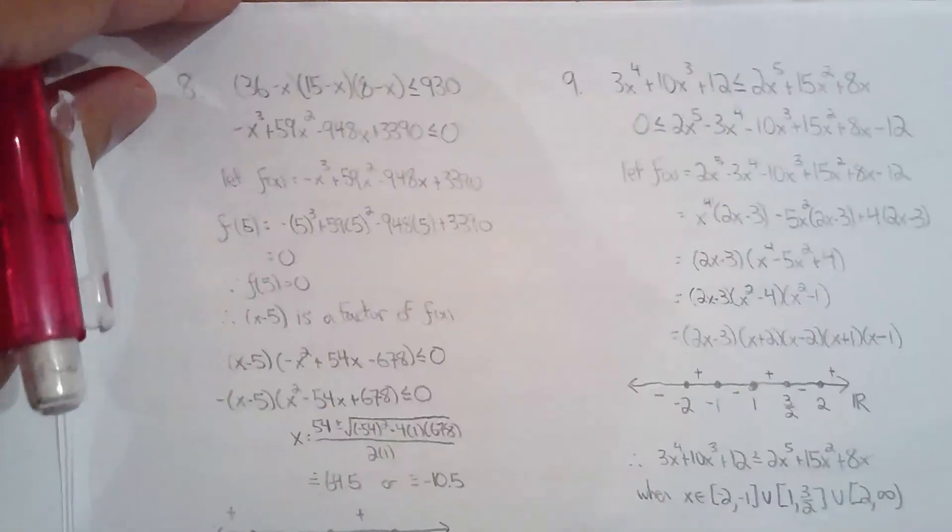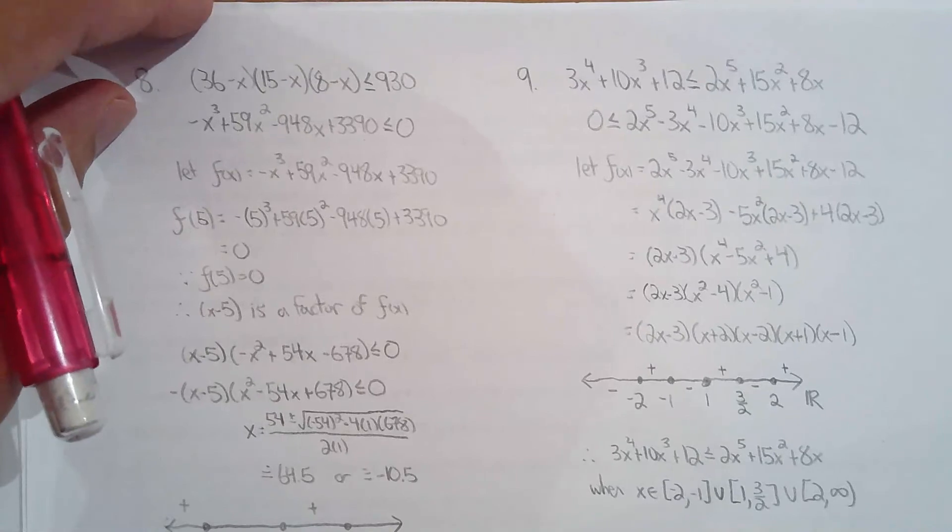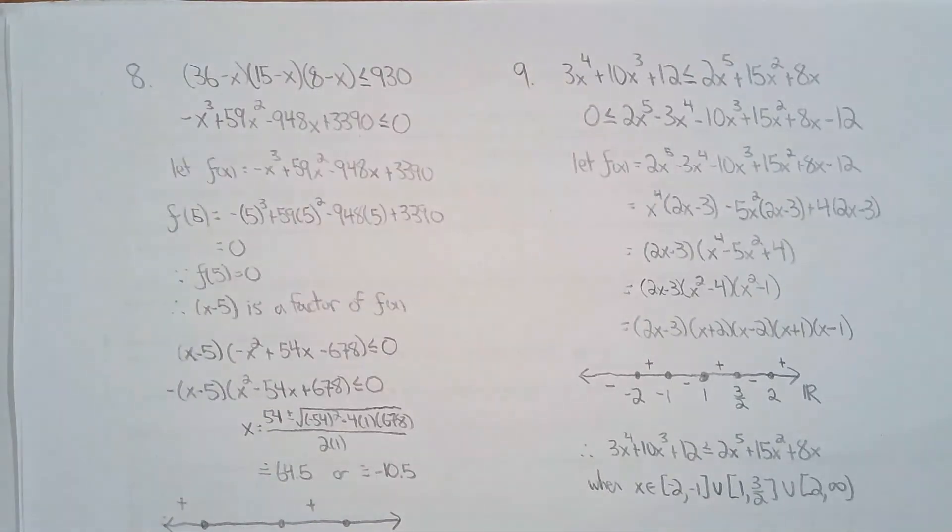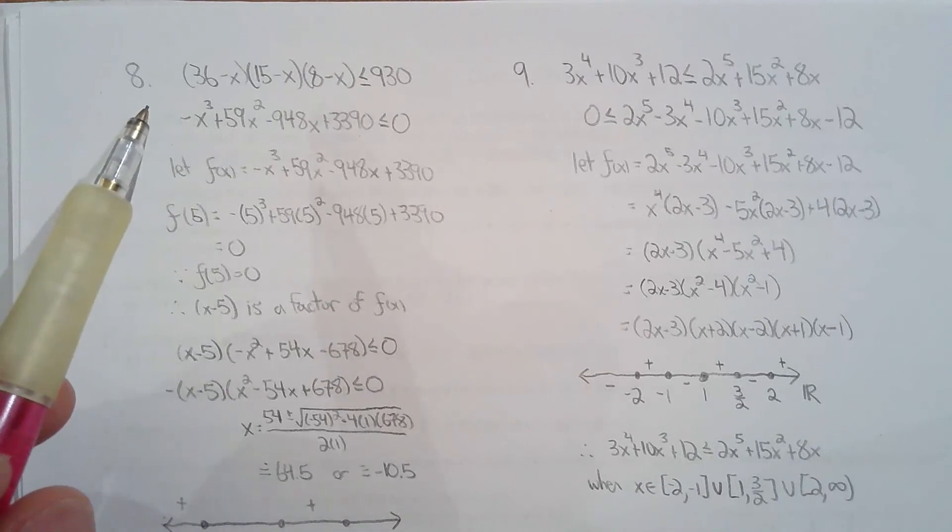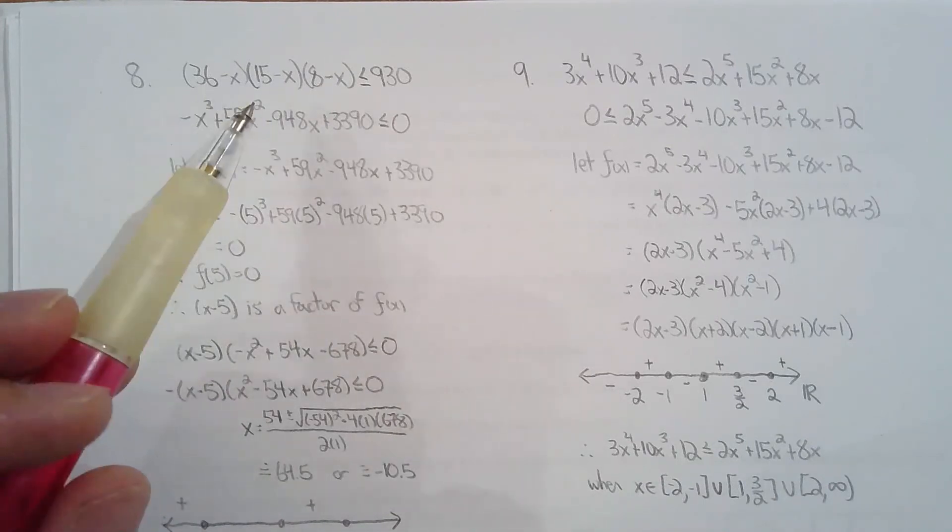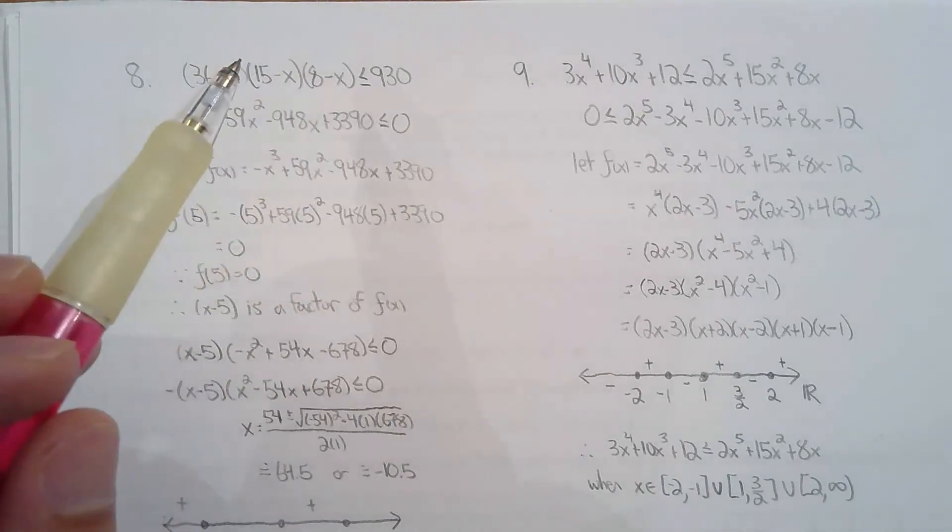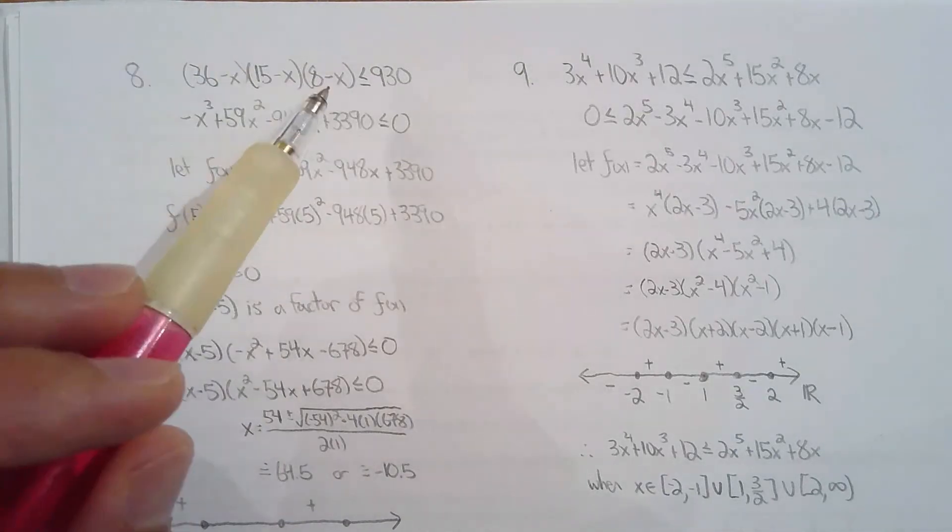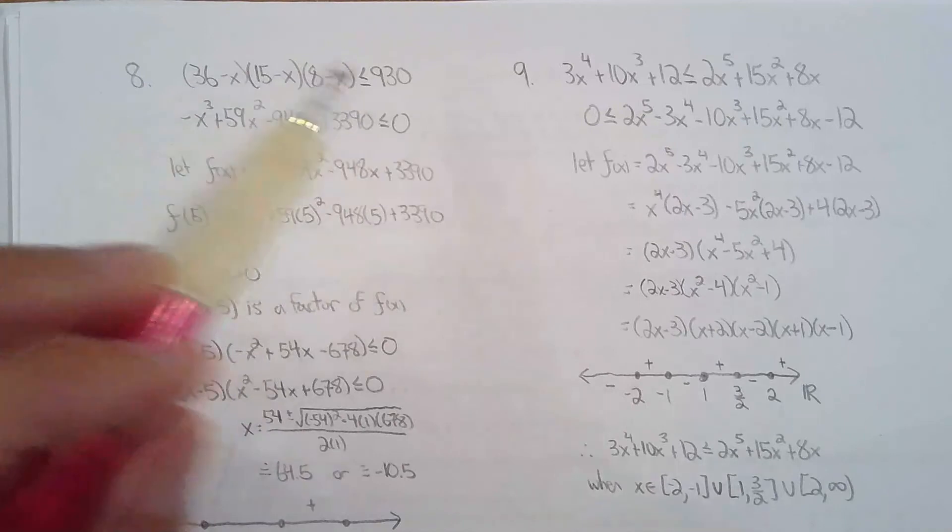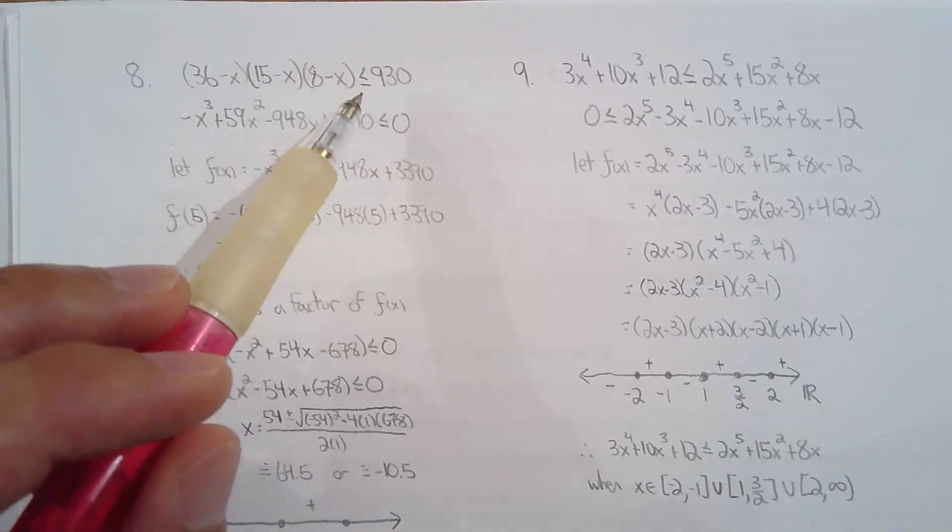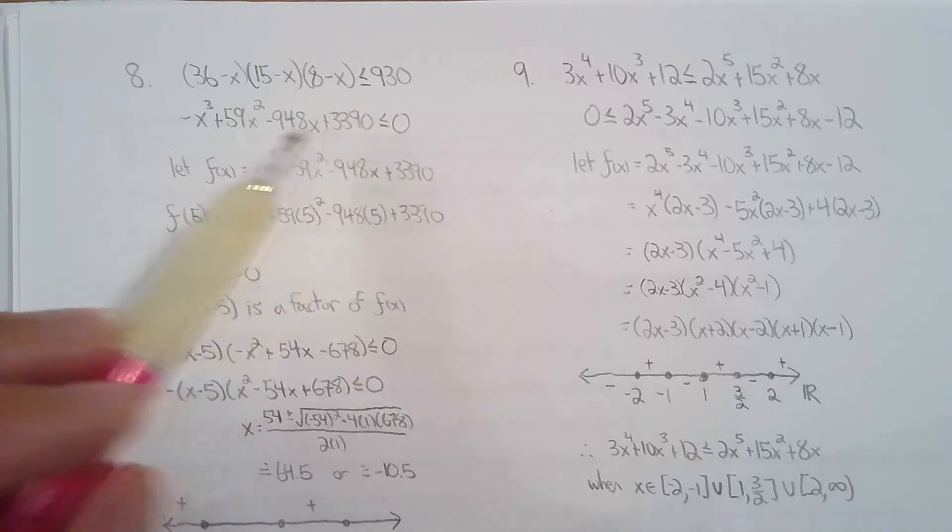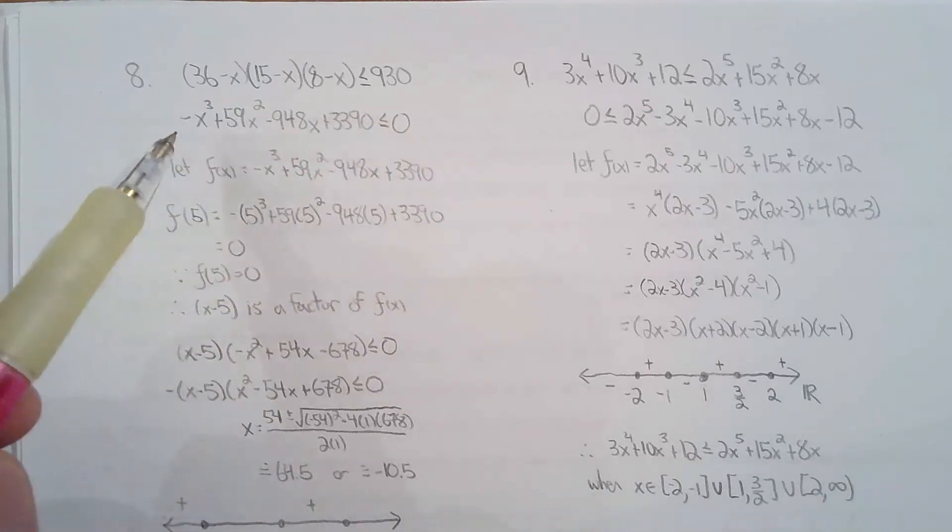Alright, question 8 was a nice little word problem. They had a box that was measuring 36 centimeters by 15 centimeters by 8 centimeters. You decrease each dimension by x, and the volume of the box has to be less than or equal to 930 cubic centimeters. So create your inequality. You've got to do the expansion, no shortcut, really. Set it equal to 0. And now you're ready to solve the inequality, but unfortunately, that means you have to factor.